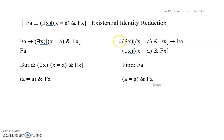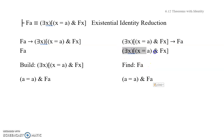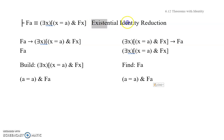Let's think about how you would get the right-to-left direction. Here you would assume this whole thing, and you would be trying to find FA. It's going to be pretty easy to get this just by existentially instantiating. What you're going to want to do is existentially instantiate this to a V, and you're going to get V is identical with A and FV. Then from the reflexivity of identity, A is identical with A, and from there you should be able to build this. Pause now and see if you can prove existential identity reduction as a theorem of logic.